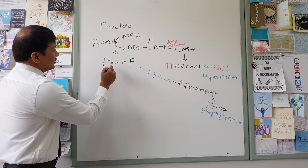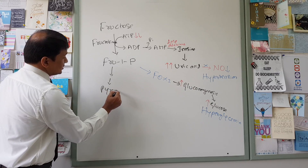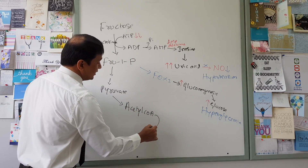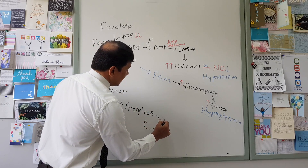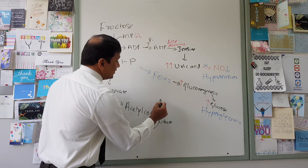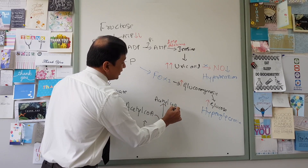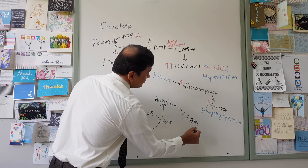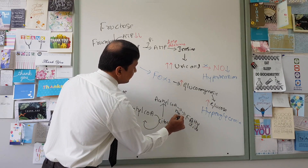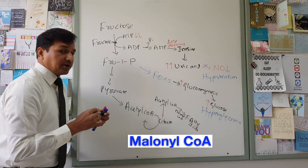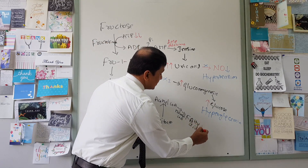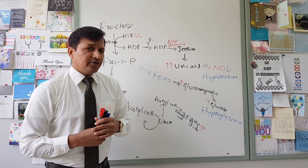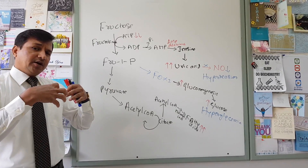Additionally, fructose-1-phosphate undergoes glycolysis, ultimately forming pyruvate. Pyruvate enters the mitochondria of the hepatocyte and is converted into acetyl-CoA. This acetyl-CoA initially enters the TCA cycle, but eventually citrate — a TCA intermediate — exits into the cytoplasm, where it is converted back into acetyl-CoA. This cytoplasmic acetyl-CoA is then used for fatty acid synthesis, producing more and more fatty acids.